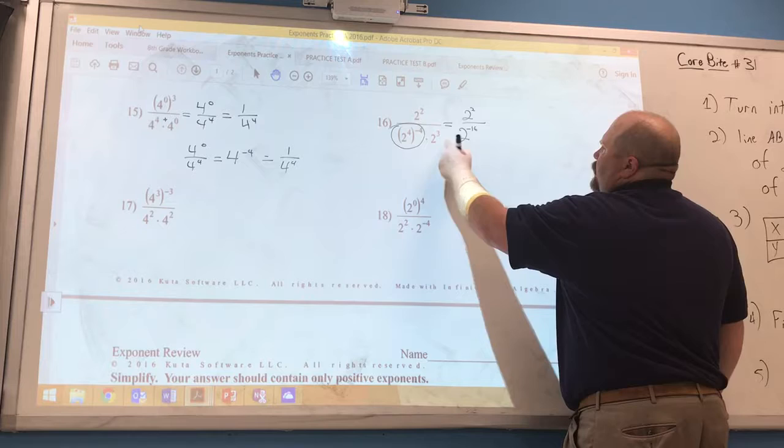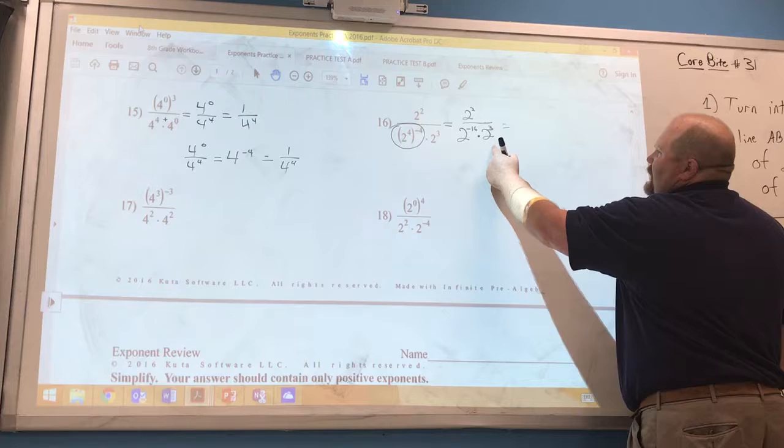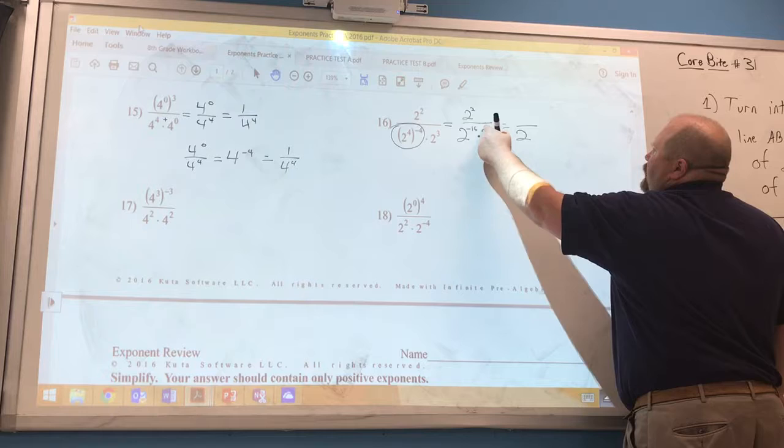We're going to bring this other piece over and we're going to simplify the denominator now. So we have multiplying like bases. We're going to add exponents. So on the bottom we're going to have two and when we add negative 16 plus three we get negative 13.